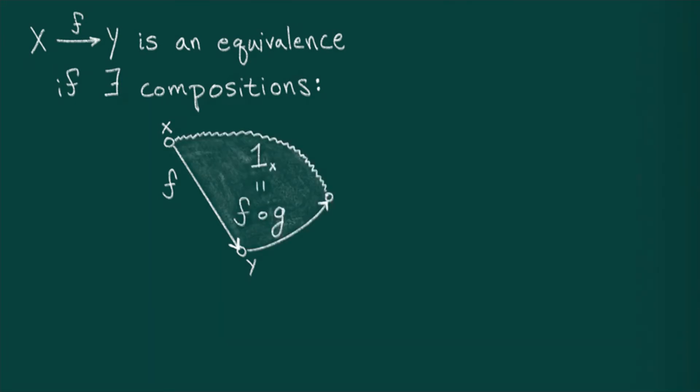In other words, I want to say when a map f from x to y is an equivalence. So f will be an equivalence if there exists two compositions of the following form. First, I want some map which undoes f. This can be formalized by saying that there exists some map g from y to x whose composition with f is the identity on x.